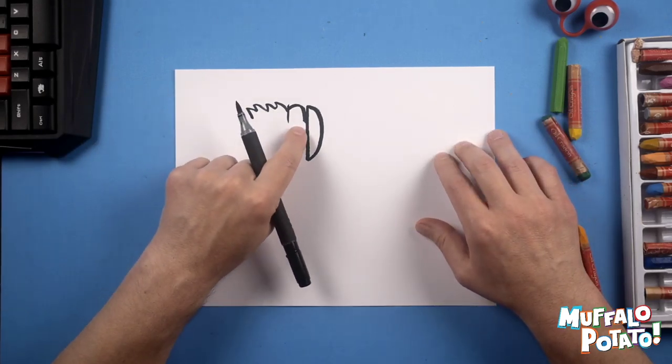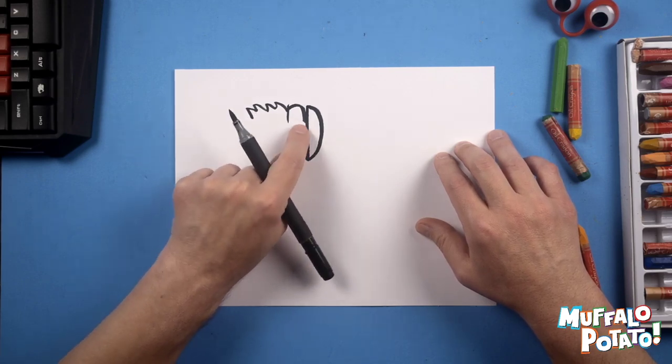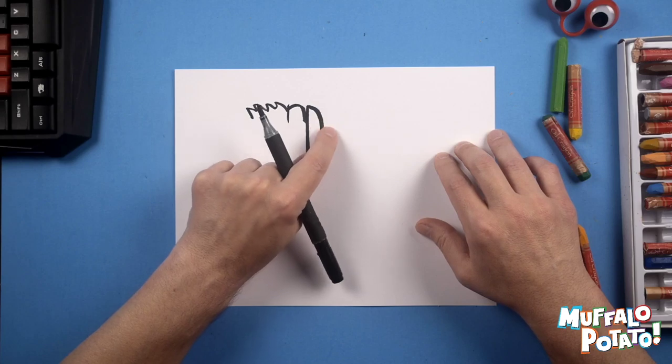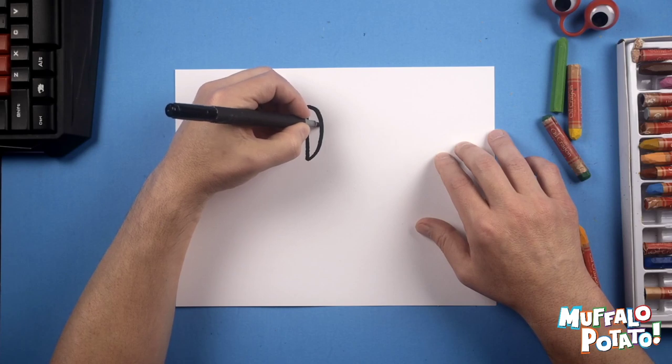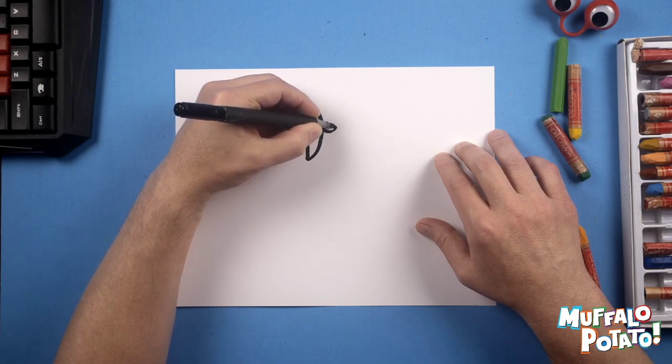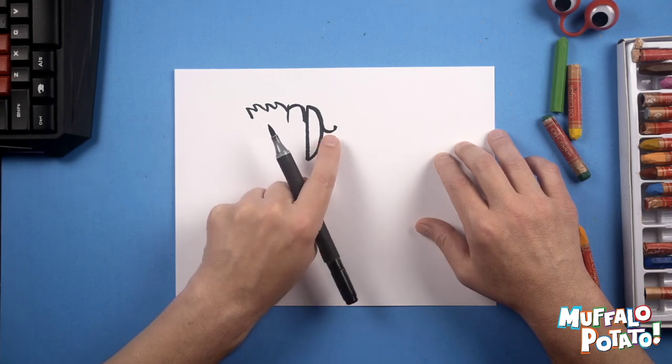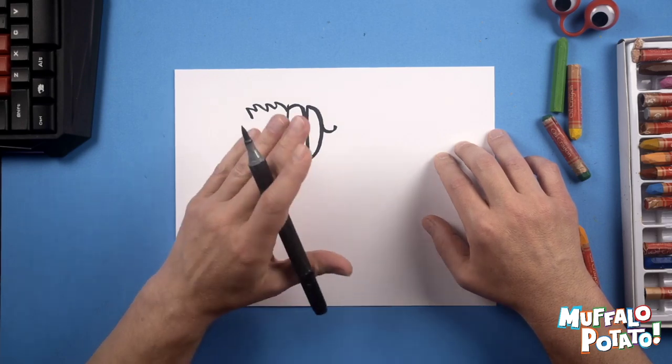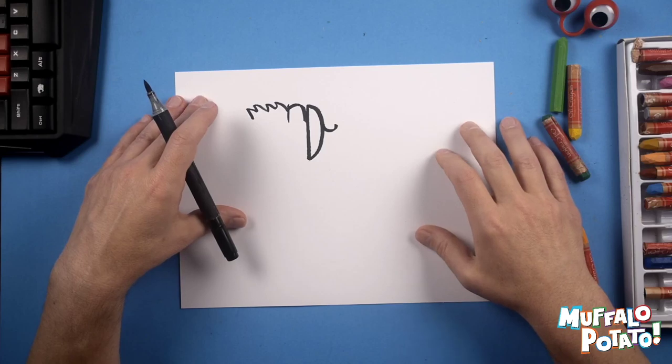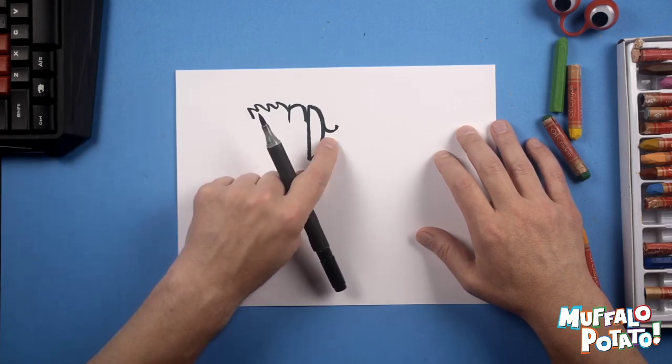Just to the right of our thin D, and starting right where that N ends, we're going to do a small lowercase u, not very large at all. Just like this, down and back up again. Very small lowercase u. Kind of looks like a C lying on its back.